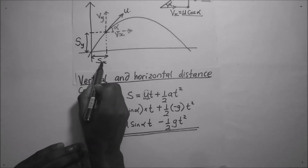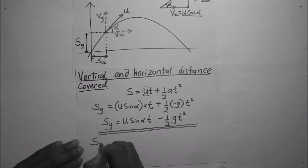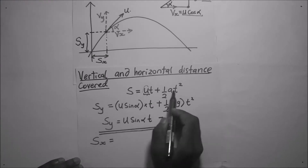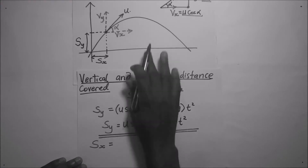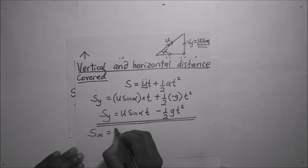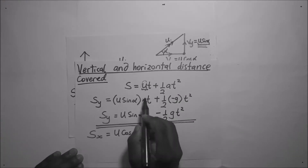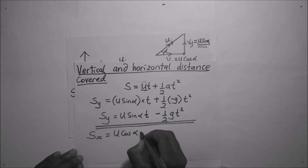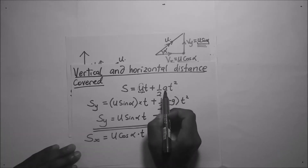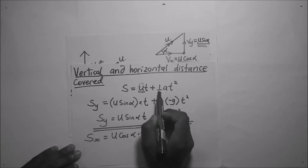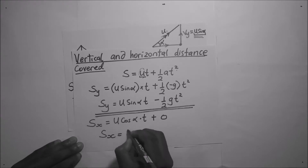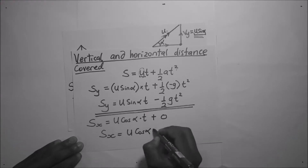For S_x, the distance in the horizontal direction, u in the horizontal direction is u cos(alpha). So applying the same equation, it becomes u cos(alpha) times t. In the horizontal direction there is no gravity, so acceleration is zero and that term disappears. Therefore S_x equals u cos(alpha) times t.